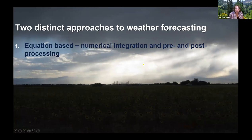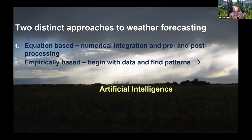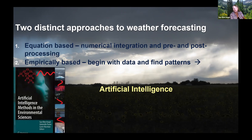I want to return to the 1950s and 60s, when we were first deciding how to best advance weather forecasting. There were two approaches generally considered: first, the equation-based approach — numerical integration of the equations of motion with pre- and post-processing — and second, statistical methods to forecast. As we know, for quite some time the NWP approach really won out. But more recently, with the growth of computers and the popularization of artificial intelligence, we're beginning to see the second way used more.